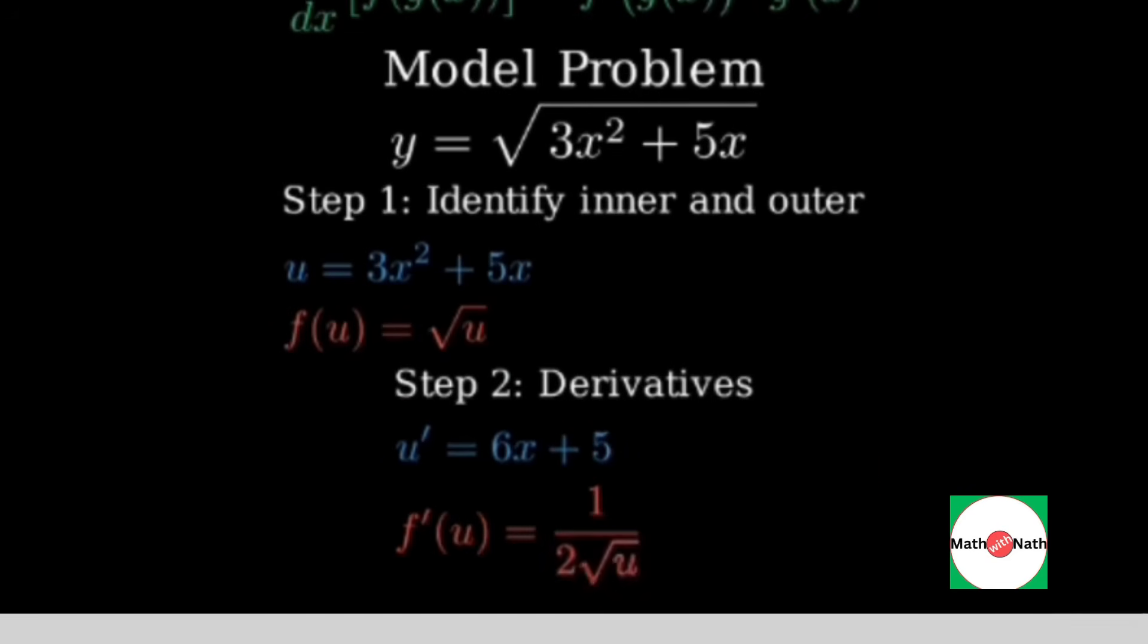Step two, compute the derivatives of the inner and the outer. u prime equals 6x plus 5. f prime of u equals 1 over 2 square root of u.